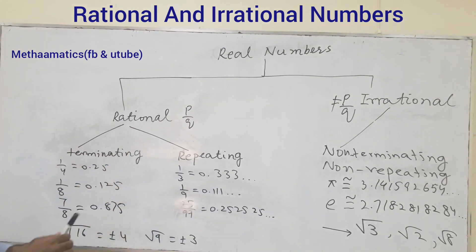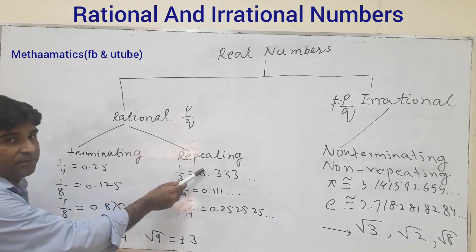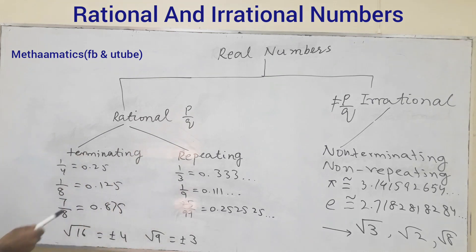Rational numbers are terminating as well as repeating. For example, 1 upon 4 equal to 0.25, these are examples of terminating numbers. 1 upon 4, 1 upon 8, 7 upon 8, these all are terminating numbers.